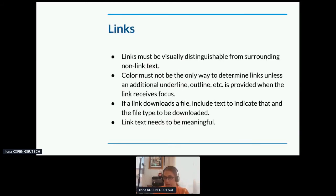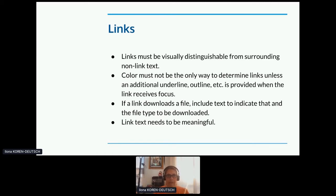About links: you have to have your links visually distinguishable from surrounding non-link text. Color must not be the only way to determine a link, unless an additional underline or something is provided when the link receives focus. If a link downloads a file, you need to include text to indicate that and the file type to be downloaded — no 'click here,' but also say this is going to download a PDF. Link text needs to be meaningful, and you can check that by reading it aloud. Meaningful link text also helps SEO.